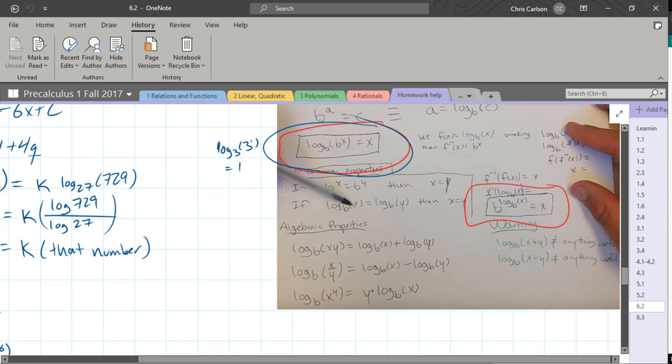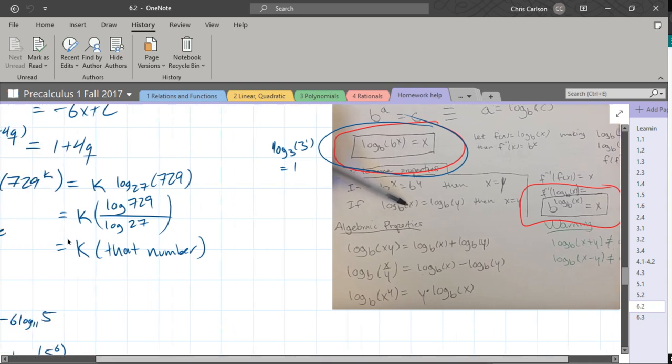So mainly we're going to be using the ones in the lower left. The first one is the exponential one at the bottom. An exponent becomes a coefficient. Multiplication inside becomes addition outside, and division inside becomes subtraction outside. Those are the three that we're going to need.